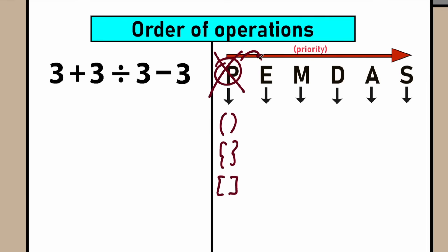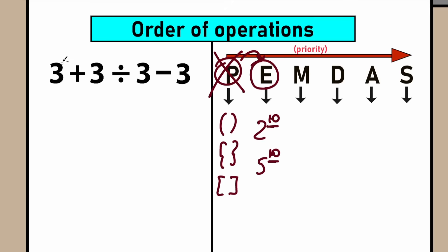So after parentheses, we need to evaluate the expression with E. E stands for exponents — we're talking about, for example, 2 to the power 10, or 5 to the power 10. These are powers. Right now let's scan where do we have powers in our question. We don't have any three squared, we don't have any three cubed. We have a regular expression without any power. So we can actually skip this part too.